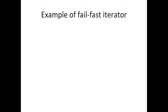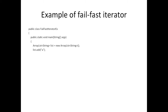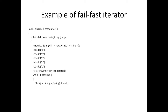Let's have a look at an example of a fail-fast iterator. We are creating a Java class with a main method, creating an ArrayList and storing some values. We are trying to iterate it using the iterator, retrieving the value using the next method of the iterator, and then we are trying to add a value to the list.